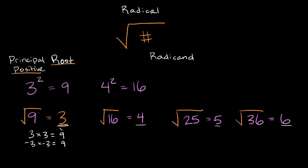The only way you would get negative 3 for your answer is if there was a negative sign on the outside next to your radical. Because then you'd say: what's the square root of 9? Well, that's positive 3. But since we have this negative sign on the outside, we carry that over. So if we had the negative square root of 9 written like this, then your answer would be negative 3. And it applies to every other example here — if we had a negative symbol on the outside, not on the inside, you would just carry that negative symbol to the front, and your answer would be negative 4.